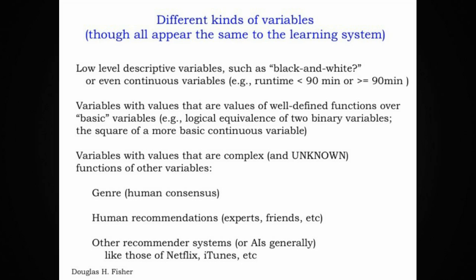Finally, there are different kinds of variables that we could use to represent knowledge. Very often these variables will be low level descriptive variables like whether the movie is in black and white. We can even allow continuously valued variables though. Whether the runtime, for example, is less than 90 minutes or greater than or equal to 90 minutes, which might be important in characterizing the behavior of certain users who are impatient with longer movies.